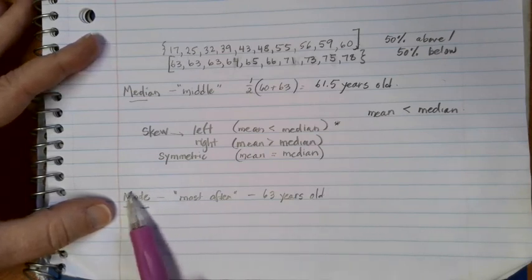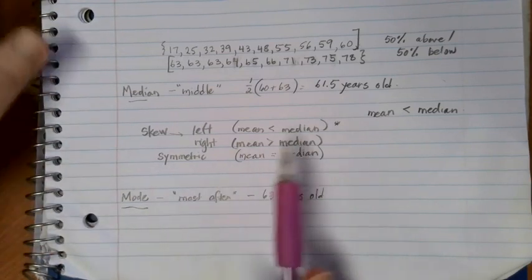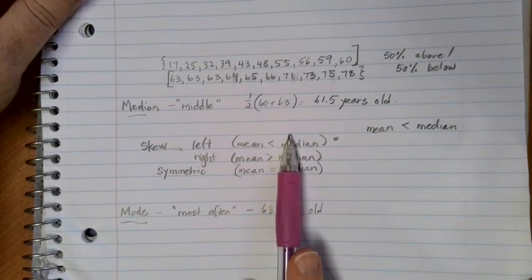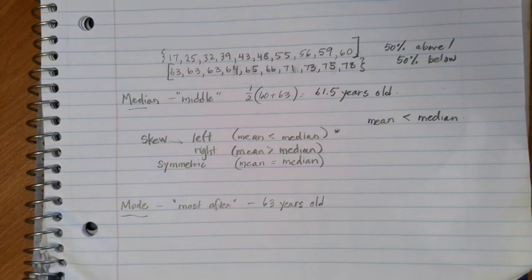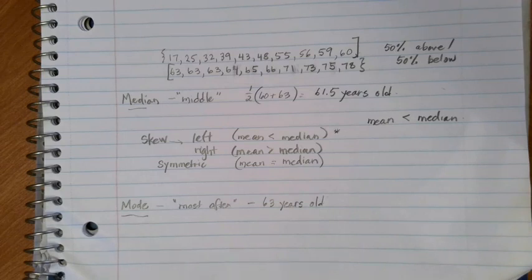You would just be getting names as results, and in that case the central value that you'd be interested in is the mode because we couldn't really put them in order or average out words, right. But we can figure out what value shows up the most often in our list. So that ends up being that third type of way that we can talk about it.